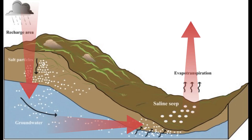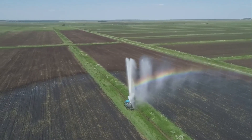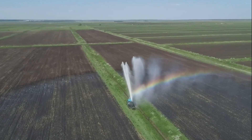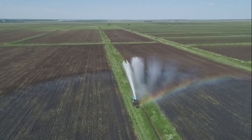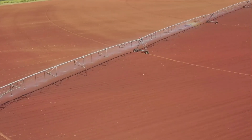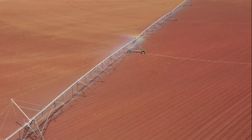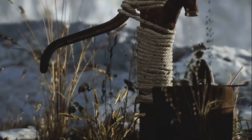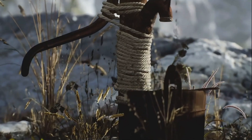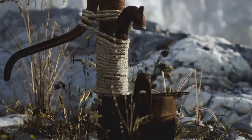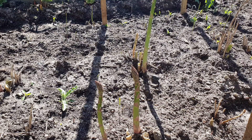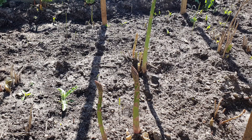Soil salinity may be caused by the natural accumulation of salts in the soil or the result of inappropriate human activities leading to the formation of saline soils. Soil salinization occurs mainly from over-fertilization with mineral fertilizers — using too high doses in agricultural areas and greenhouse crops. Before using them, we should determine the actual needs of the soil and use only the necessary nutrients.